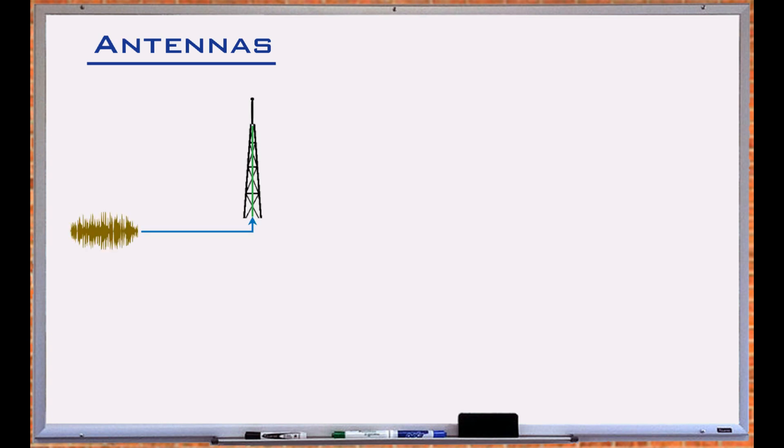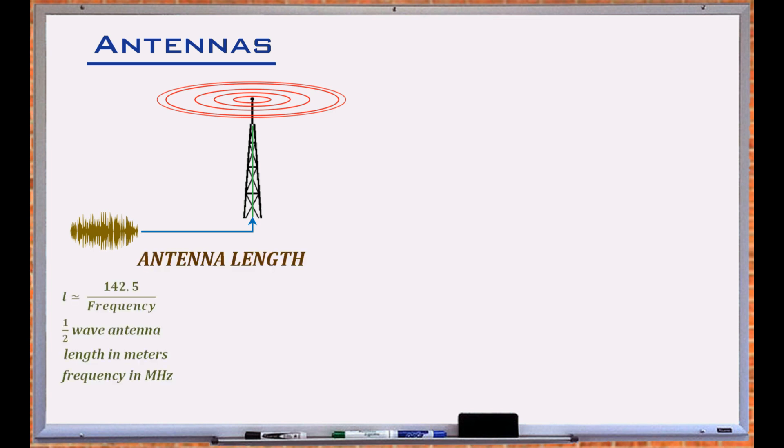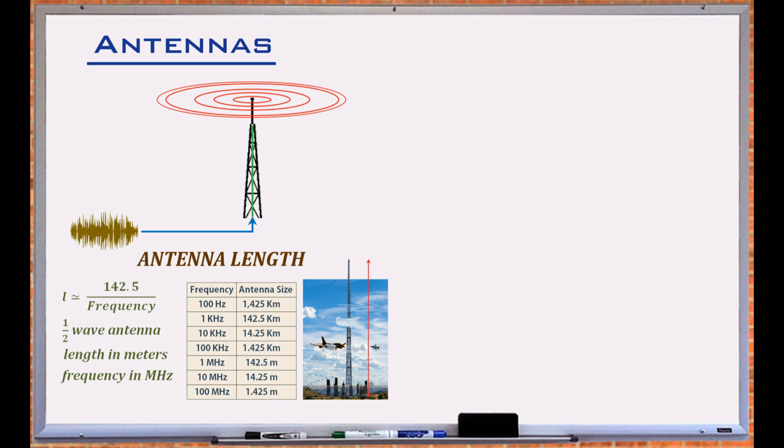An antenna converts an electrical signal to EM waves to make it transmittable. The length of the antenna inversely depends on the frequency of the signal. For low-frequency signals such as electrical representation of sound out of a microphone, the size of the antenna grows to hundreds of kilometers, making the transmission impractical.